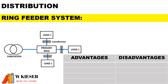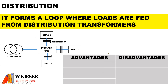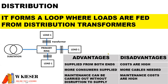For the ring feeder system, you'll notice that we have a type of loop that is being supplied, so you can supply your load from different sides and not just one side. In terms of the advantages, it is supplied from both ends, more consumers are supplied, and maintenance can be carried out without disruption to the supply. However, for the disadvantages, the costs are higher, more cables are needed and the maintenance costs start to increase.